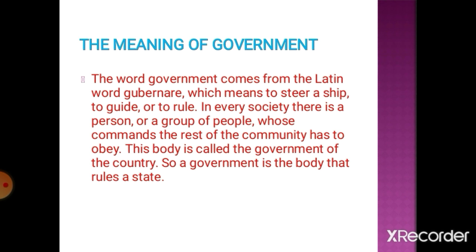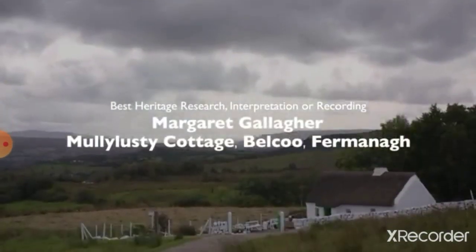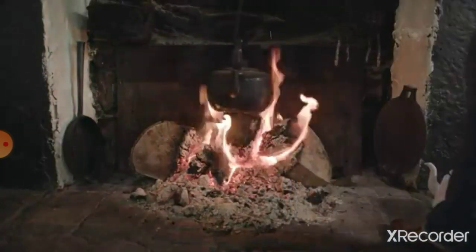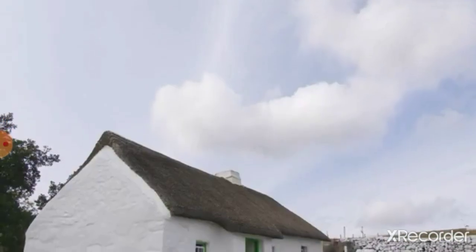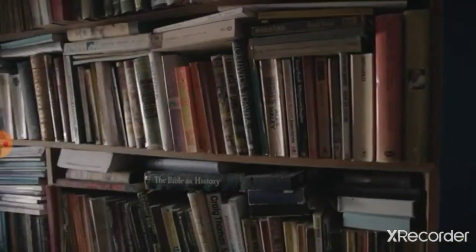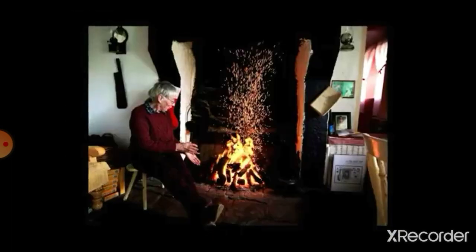Now let's see in the next video the main theme of understanding government and what happens when there is no government. Margaret Gallagher lives in the thatch cottage in which she was born in 1942. She has no electricity, running water, or television. She goes to bed when it gets dark and rises with the sun. Some regard her 280-year-old Grade A listed cottage near Belcoo in Fermanagh as a living museum and a preservation of a way of life that might otherwise have been lost or forgotten. Margaret is passionate about heritage and welcomes a wide range of visitors through the door of this unique example of vernacular architecture, where she still draws water from the well and bakes in a pot oven on the open fire.